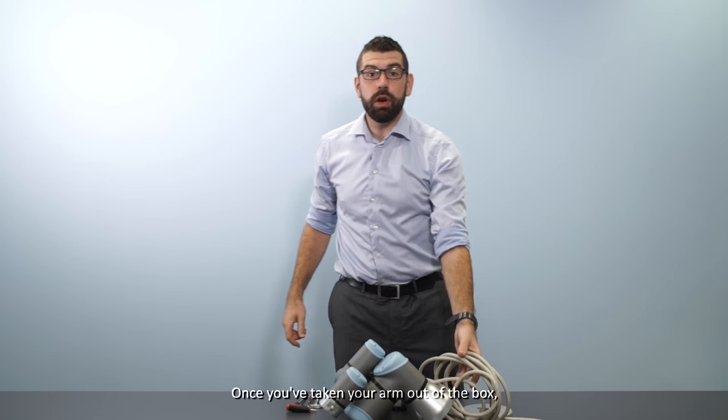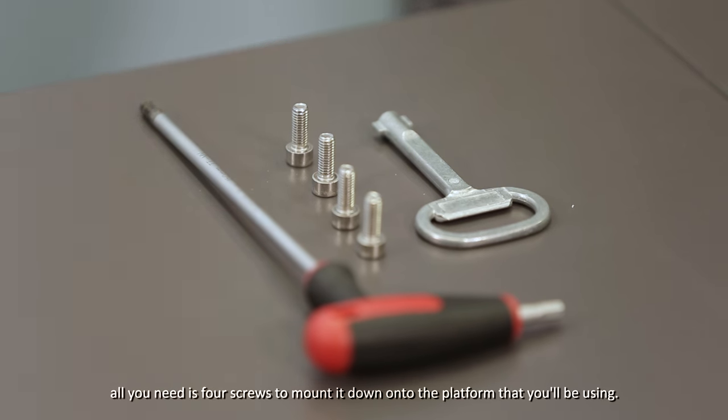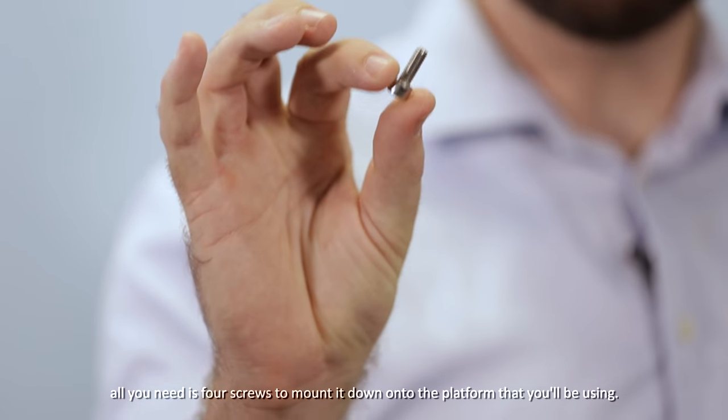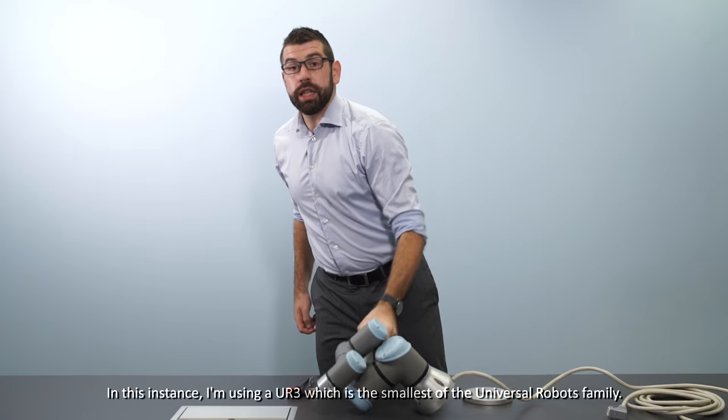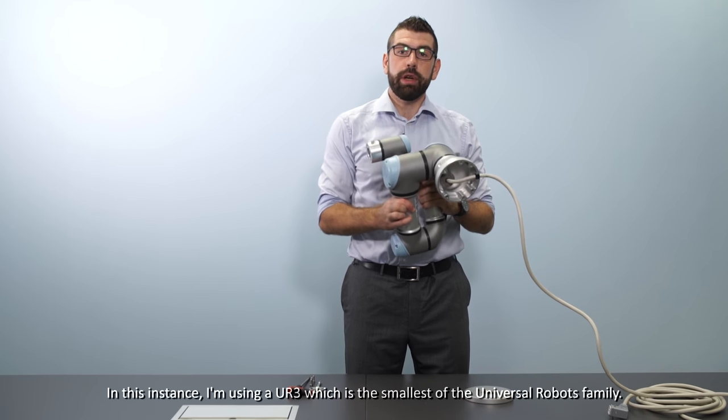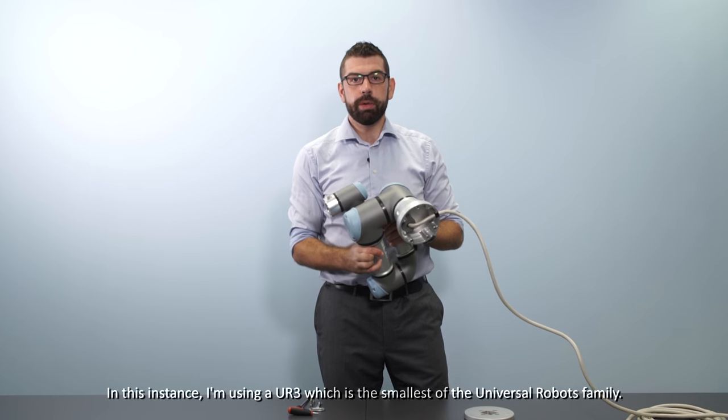So once you've taken your arm out of the box, all you need is four screws to mount it down onto the platform that you'll be using. In this instance, I'm using a UR3, which is the smallest of the Universal Robots family.